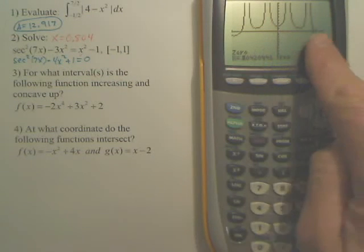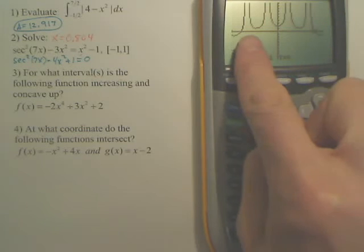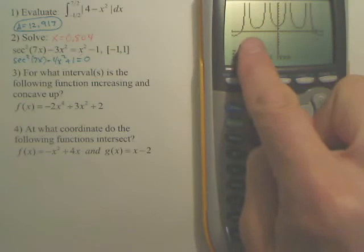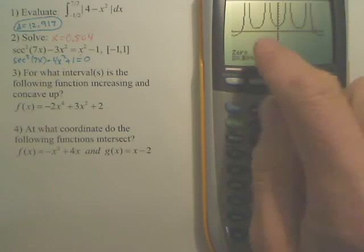Now, does this graph look symmetrical? So wouldn't this one probably be negative 0.804? Yes, it is actually, but you want to check it just in case. Sometimes graphs look symmetrical and they're just a little bit off.